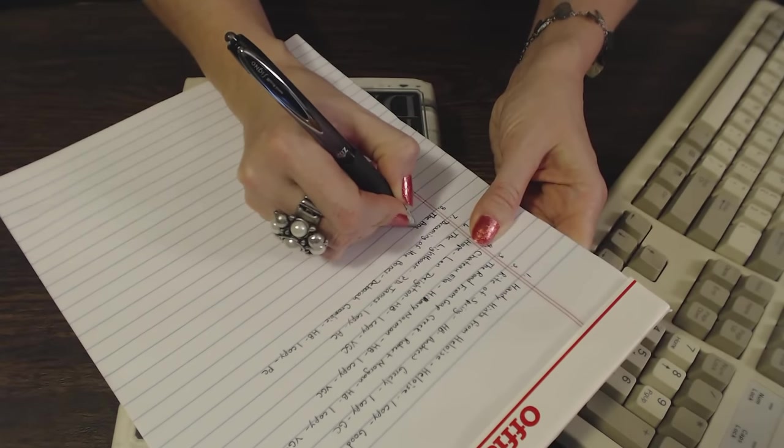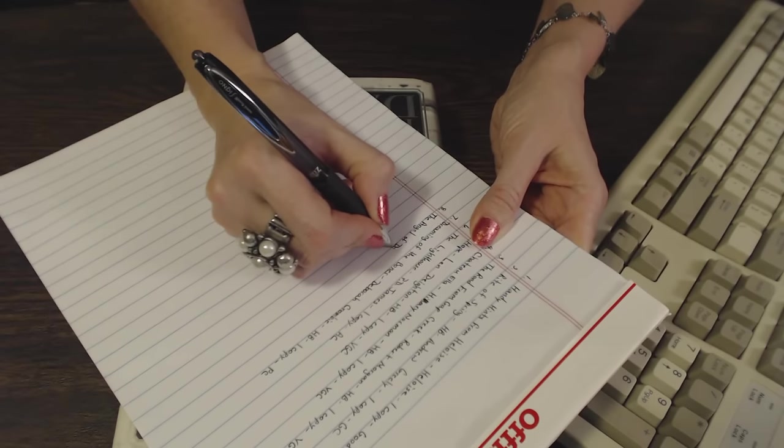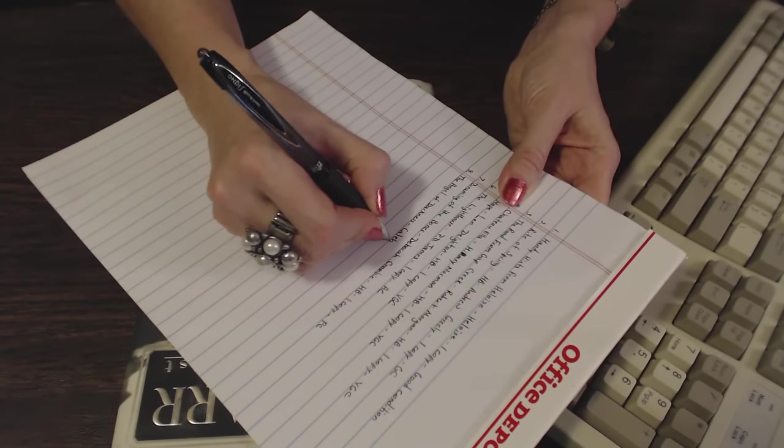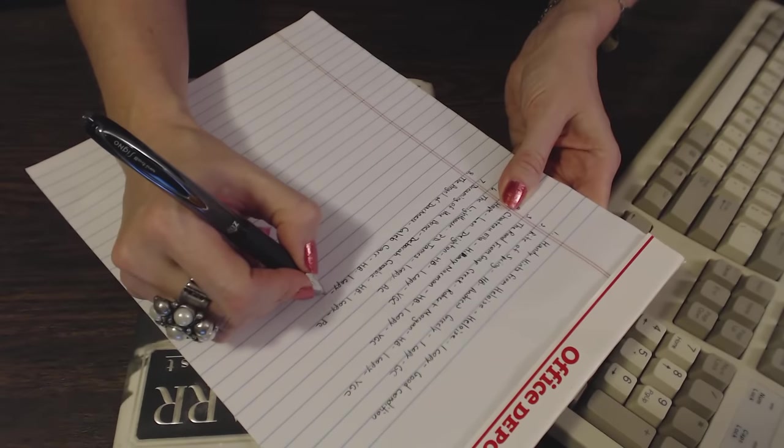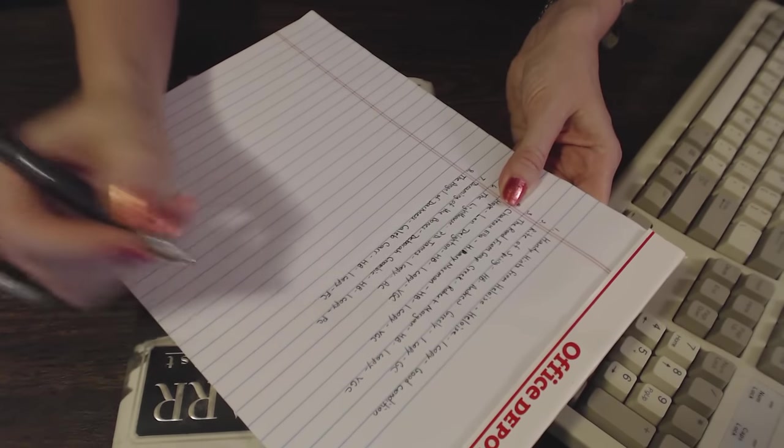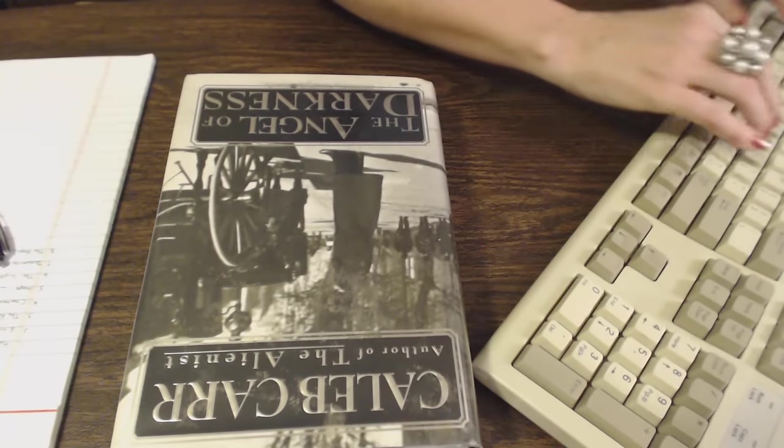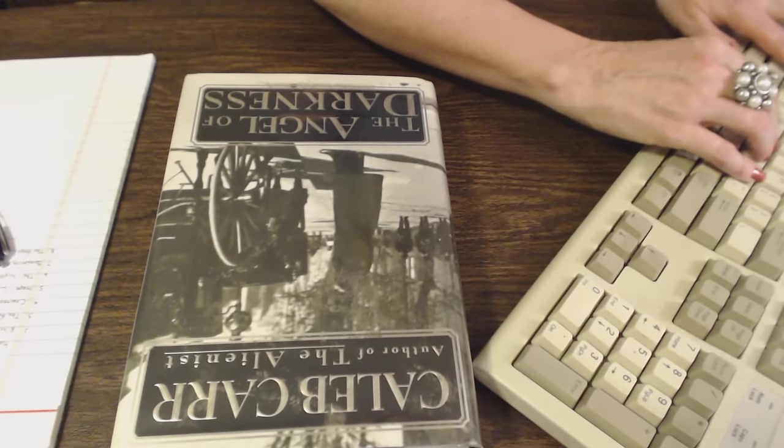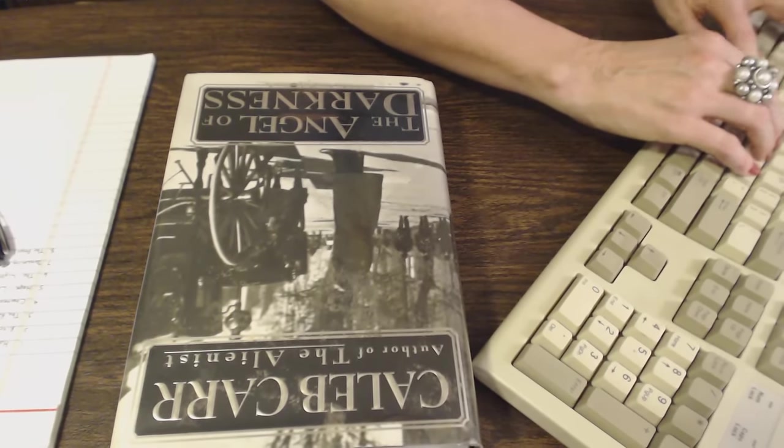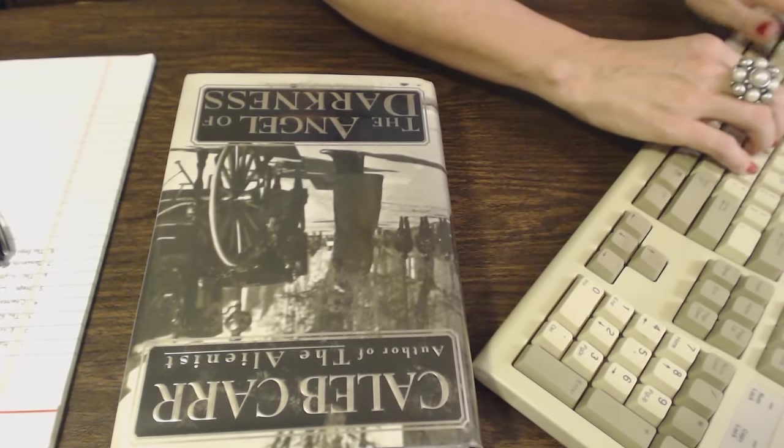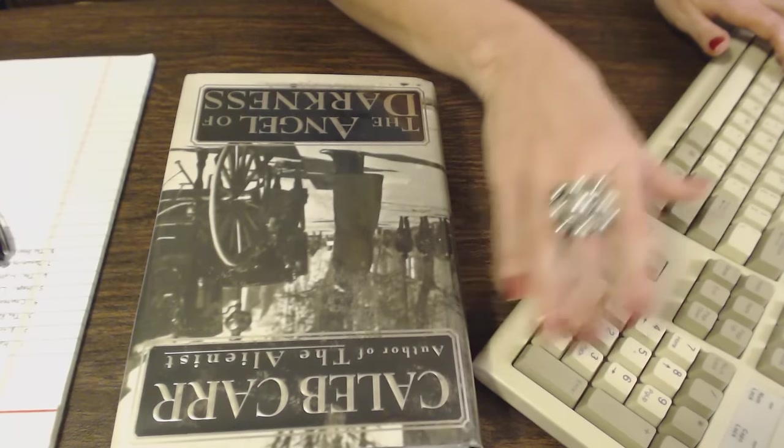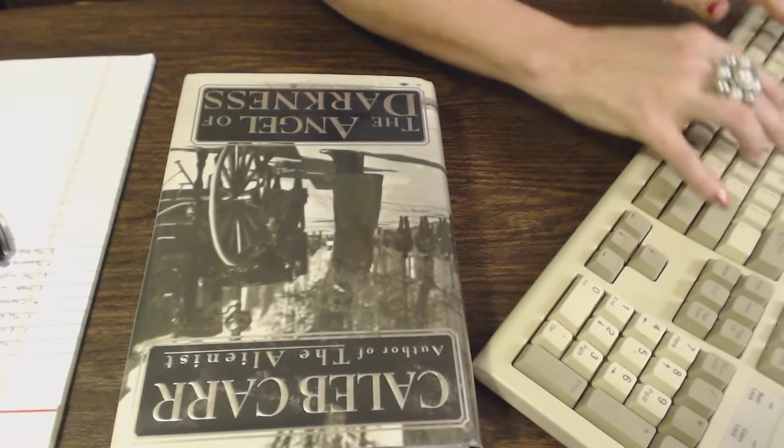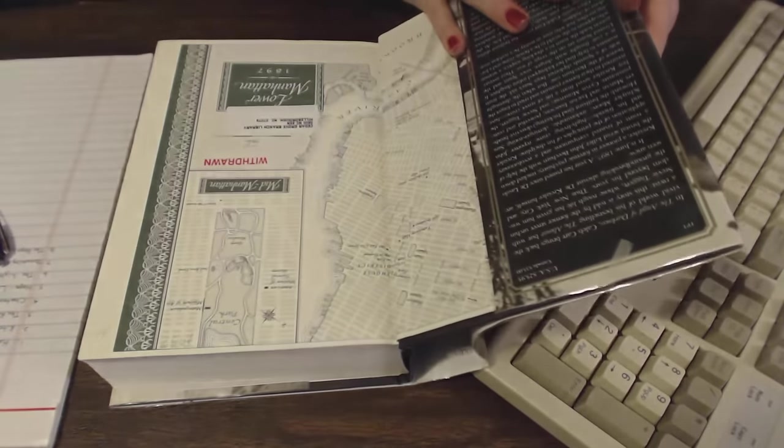But it does not rate it as poor condition or even acceptable. I would rate it at, due to the wear on the dust jacket, I would probably rate this at fair. I think I will do fair condition because of the residue on the cover. The Angel of Darkness, this will be number eight. This was written by Caleb Carr, hardback book, one copy, fair condition. Okay, so that would be number eight and the final book that was returned to the library today.